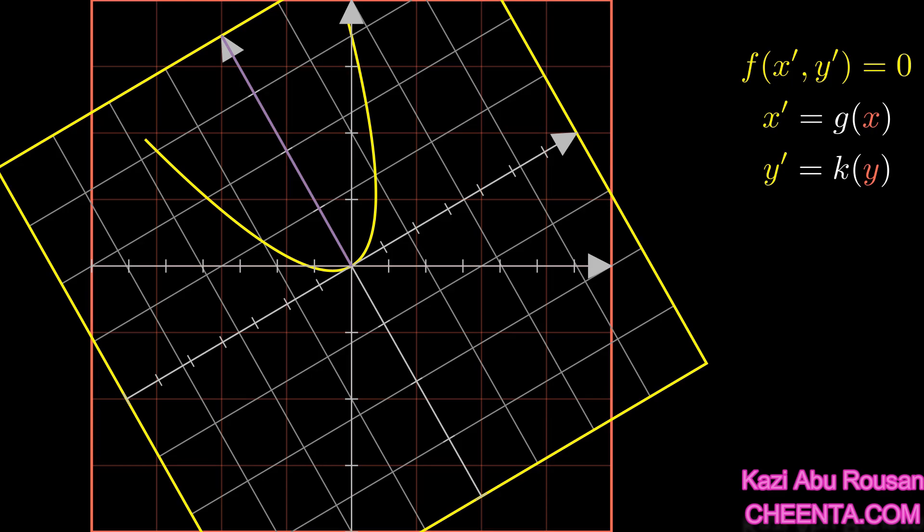Now I can substitute the values of x' and y' to find the equation of the curve from the red plane's frame of reference. I can forget about the specific curve and find the equation of any random curve using just this expression.